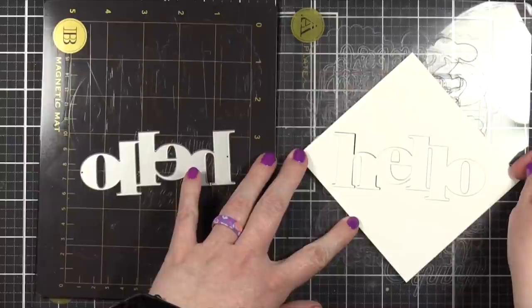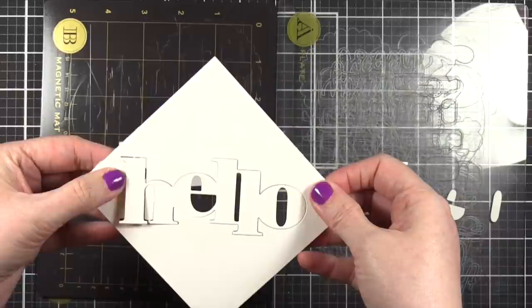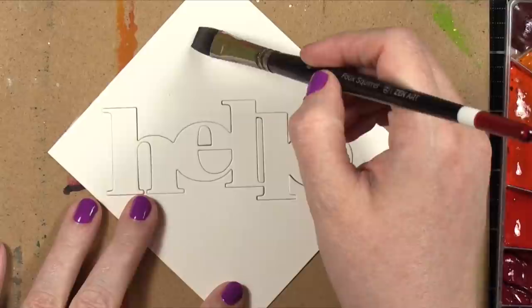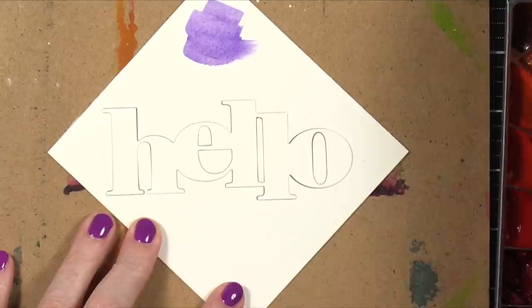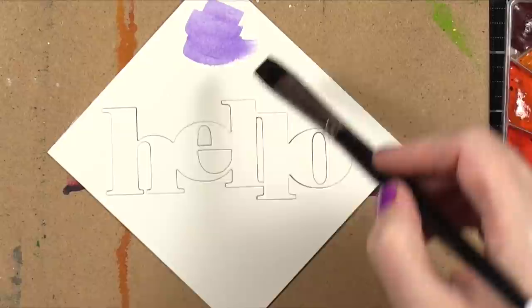This die set is from Concord & 9th and it has really bold letters that say hello. It also has a shadow die that I'll be cutting out as well. I cut out the word out of watercolor paper, using Fabriano Artistico Extra White, and then I'm going to be painting it. This is a very simple video for today.